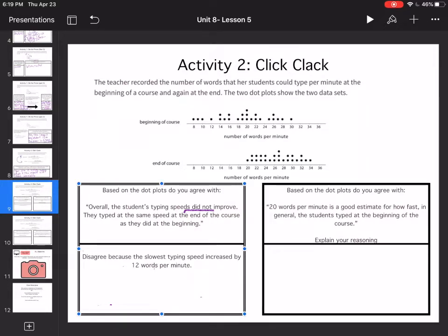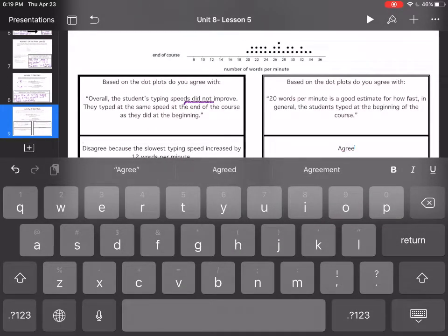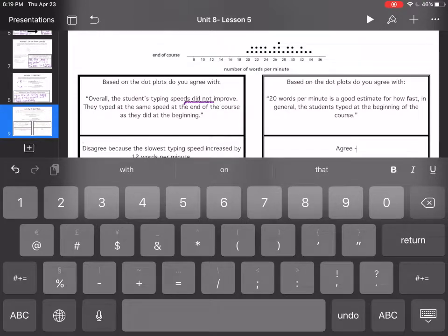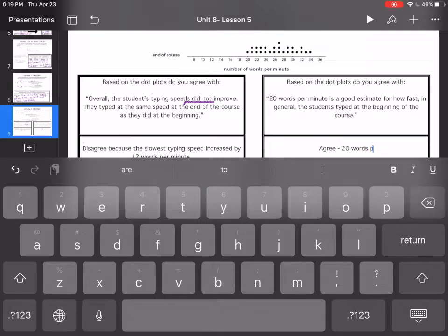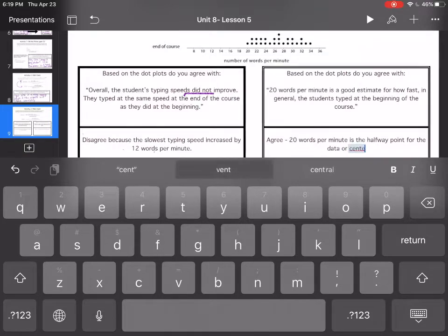24, 25. So 25 dots. So if I'm looking at 20, that's about the halfway point. So I would agree. So I'm just going to type my answer. I agree. 20, because they're talking about at the beginning of the course, 20 words per minute is the halfway point for the data. Or the center of the spread. So that's the other words you could use, the center.